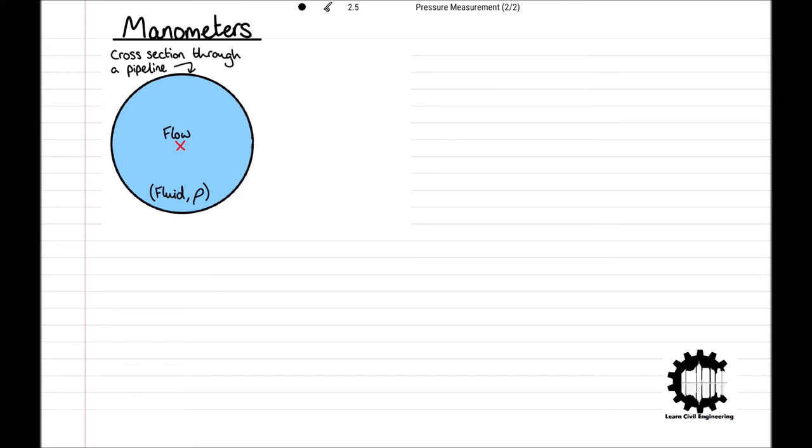The manometer consists of a transparent u-shaped tube with one end inserted into the side of the pipeline, with the other end of the tube open to the atmosphere. The manometer tube contains a second fluid, which must be a liquid this time. This second fluid is commonly referred to as the manometric liquid and has uniform density rho m, which is different from the pipeline fluid.